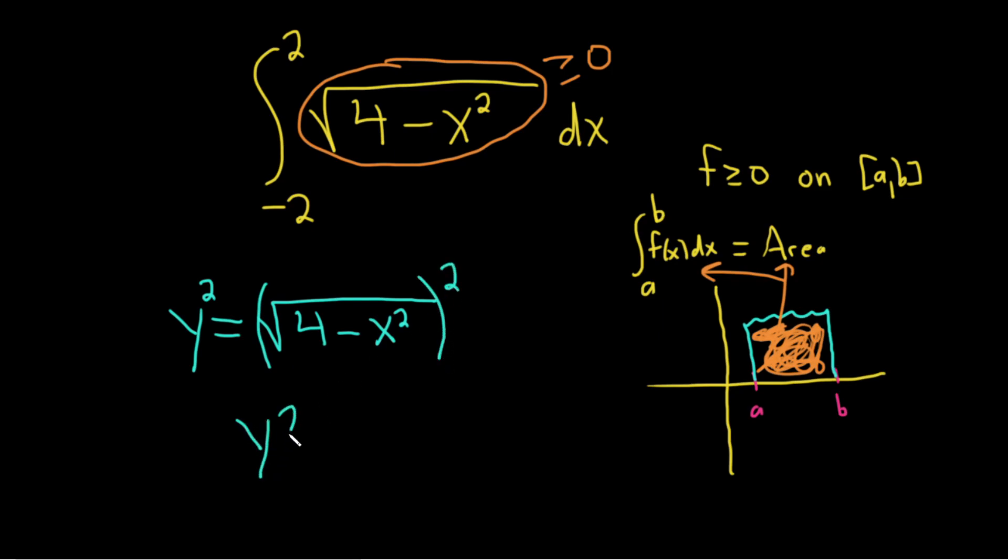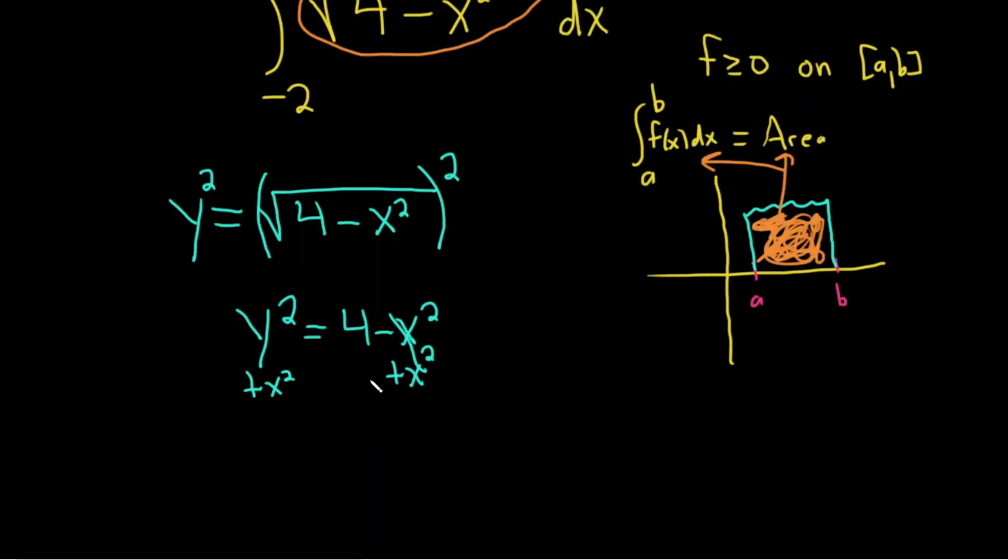So this is y squared equals four minus x squared. Now we can add x squared to both sides, so plus x squared plus x squared. So this becomes x squared plus y squared equals four. And so now, you probably see what this is.